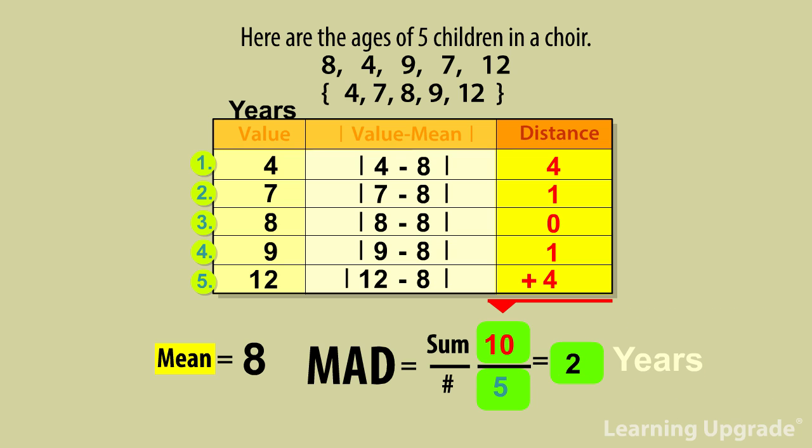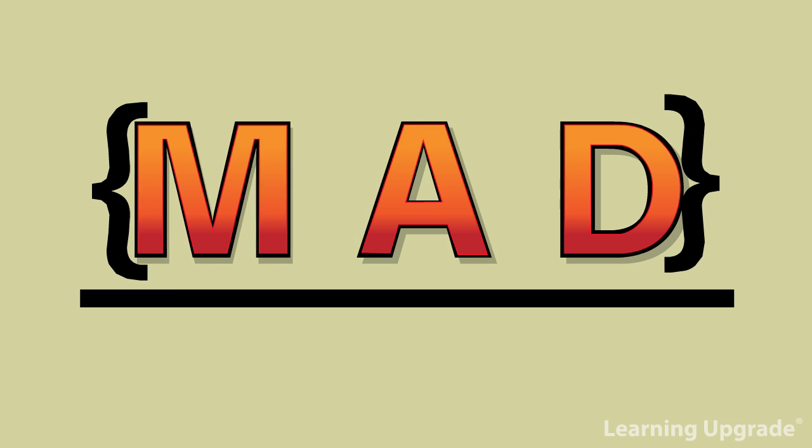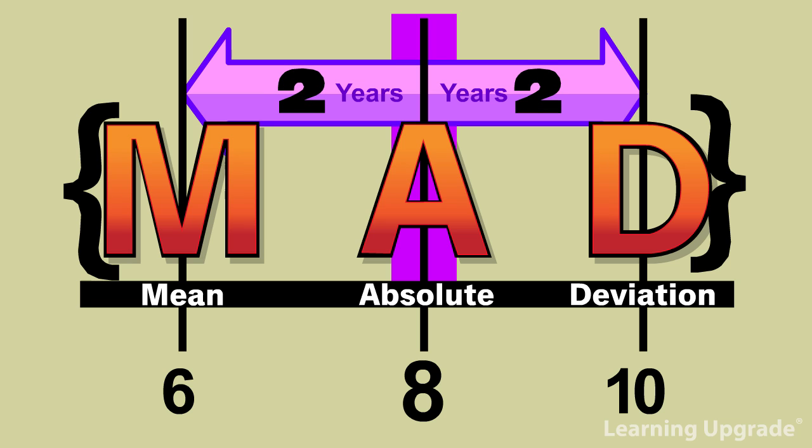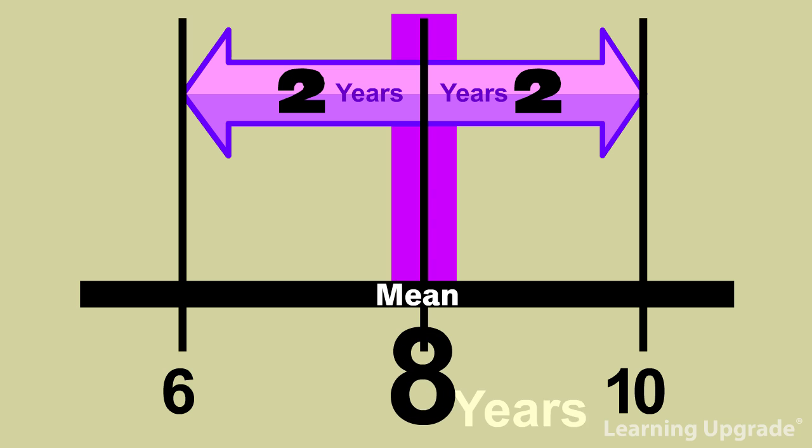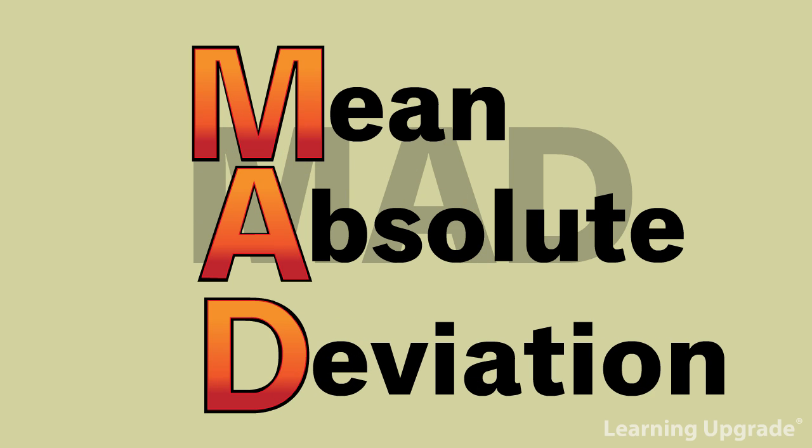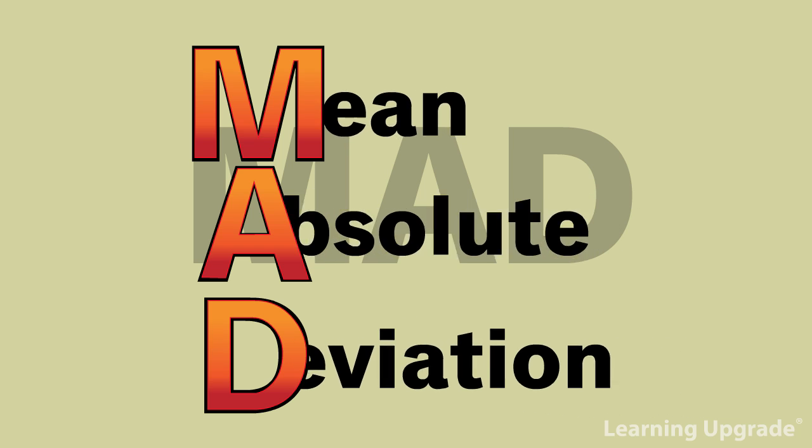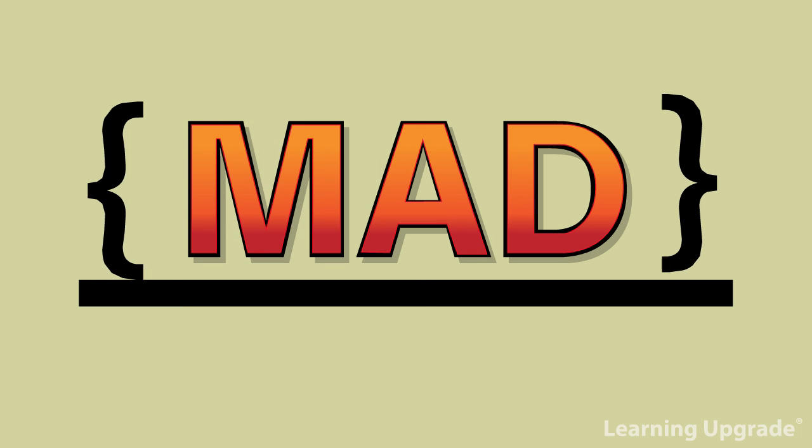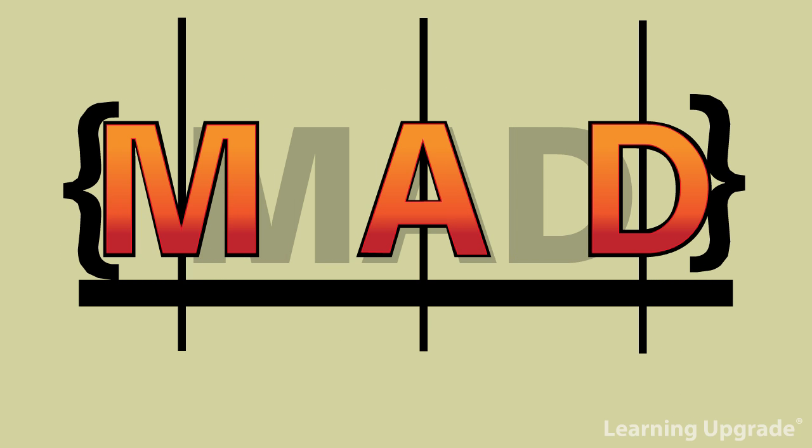The mean absolute deviation is 2 years. So the mean absolute deviation is 2 years younger or 2 years older than the mean of 8 years. The mean absolute deviation of a data set is the average distance between each data value and the mean.